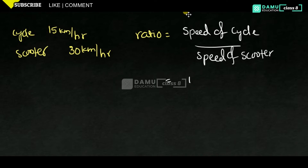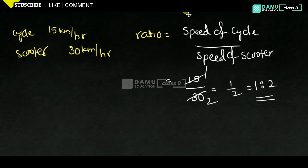Speed of cycle is 15 and speed of scooter is 30. That is 15 is to 30. Simplifying, 15 ones are 15 and 15 twos are 30, so the ratio is 1 is to 2. Like this we need to solve.